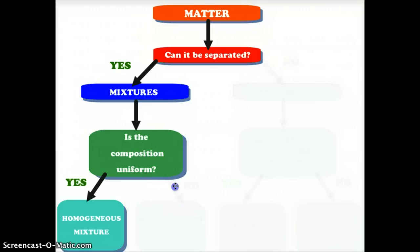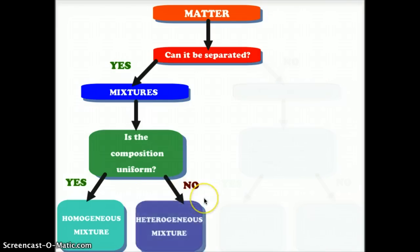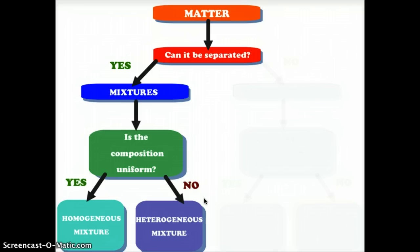However, if the answer is no, then we have a heterogeneous mixture. An example would be rocky road. Every bite is different—sometimes you get more chocolate, sometimes more nuts, sometimes nuts and marshmallows, sometimes no nuts. This is heterogeneous because it is different throughout; the consistency varies.